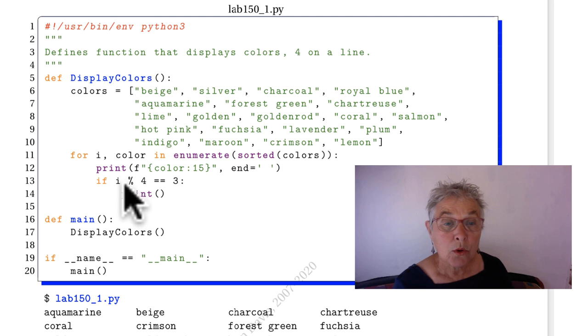Then I go to the new line. What is this? Well the first time around we have zero. Zero modulo four is zero not three.